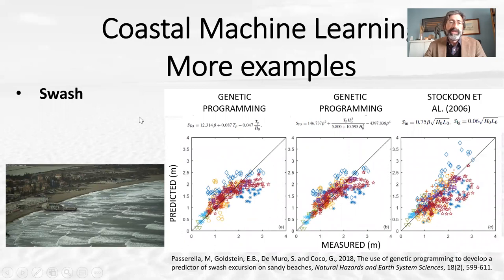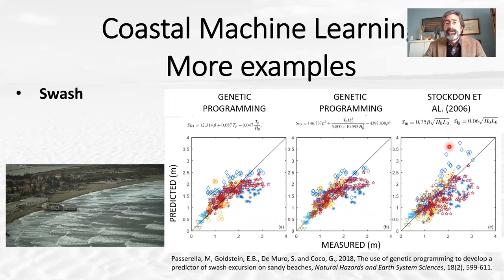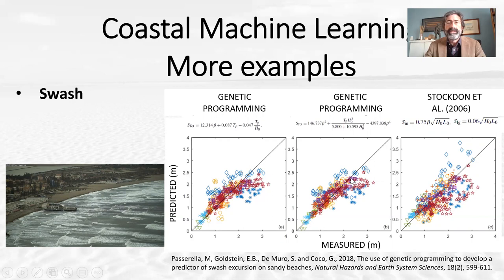Another example I think is interesting is predicting swash — very important for coastal inundation problems. We all use the Stockton et al. formula, and it involves calculating the swash associated with incident waves and infragravity waves. The formula is actually quite simple, and this is the data used originally by Stockton et al., with measured versus predicted swash elevation. We then developed some genetic programming predictors — they are only slightly more complicated than Stockton's formula, but more complicated also implies more parameters. The formulas actually work better, and already visually you can see they tend to work better, although there is some flattening in the prediction for some datasets.